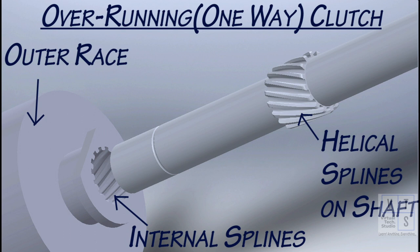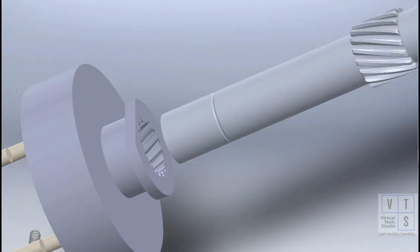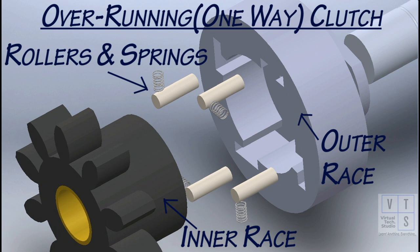The power is transmitted through the splines on shaft, which mesh with the internal splines of outer race of overrunning clutch. When the outer race is rotated, the rollers get trapped between outer and inner race and transfer power to pinion. When engine gets started and drives pinion at high speed, the rollers get released and power transfer is stopped.